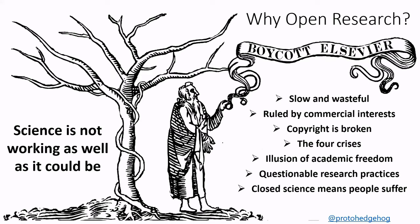So where does open research or open science come into all of this? Science is not working as well as it should be. Often it's slow and wasteful. We're not taking advantage of collaboration and the tools the web affords us. Often it's governed by commercial interests, and copyright isn't really designed to protect authors anymore. All of this is embedded in this illusion of academic freedom, where we think we have a choice but really it's out of our control.